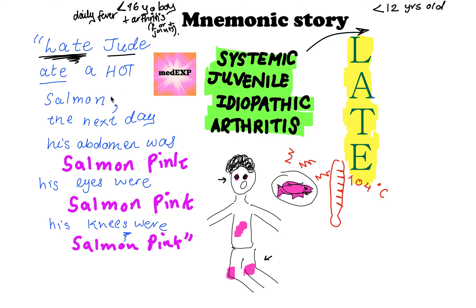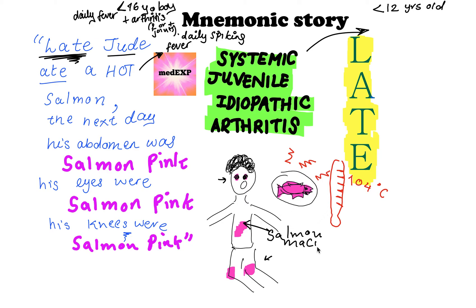He ate a hot salmon — the hot salmon indicates that these patients typically present with a daily spiking fever. The salmon color should remind you of the salmon macular papular rash. So when I say his abdomen was salmon pink, I mean they present with a salmon macular rash. The hot reminds you of fever, and the salmon reminds you of the salmon-pink color of the macular rash.